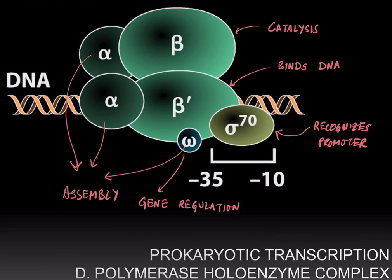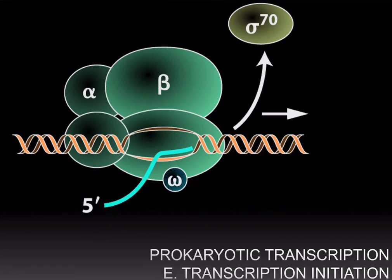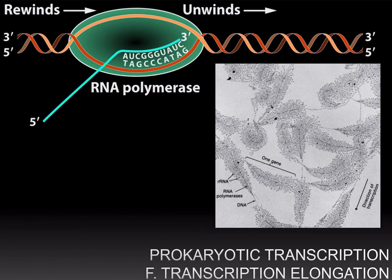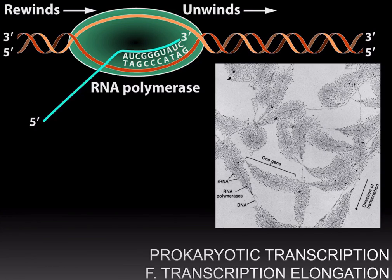There are three phases of prokaryotic transcription. The first is initiation, when the polymerase holoenzyme complex assembles at the promoter and then the sigma factor is released and transcription can begin. The next phase is elongation, when RNA polymerase unwinds the double helix, exposes the template DNA, and carries out the chain elongation reaction to build the RNA molecule.